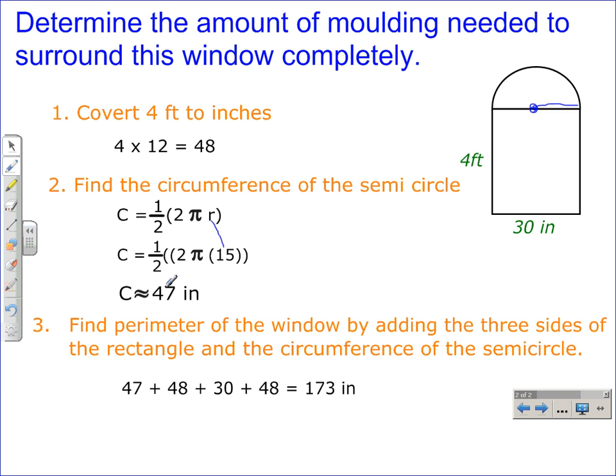And the circumference of that semi-circle is approximately 47 inches. So starting here and going around the semi-circle would be a distance of 47 inches.